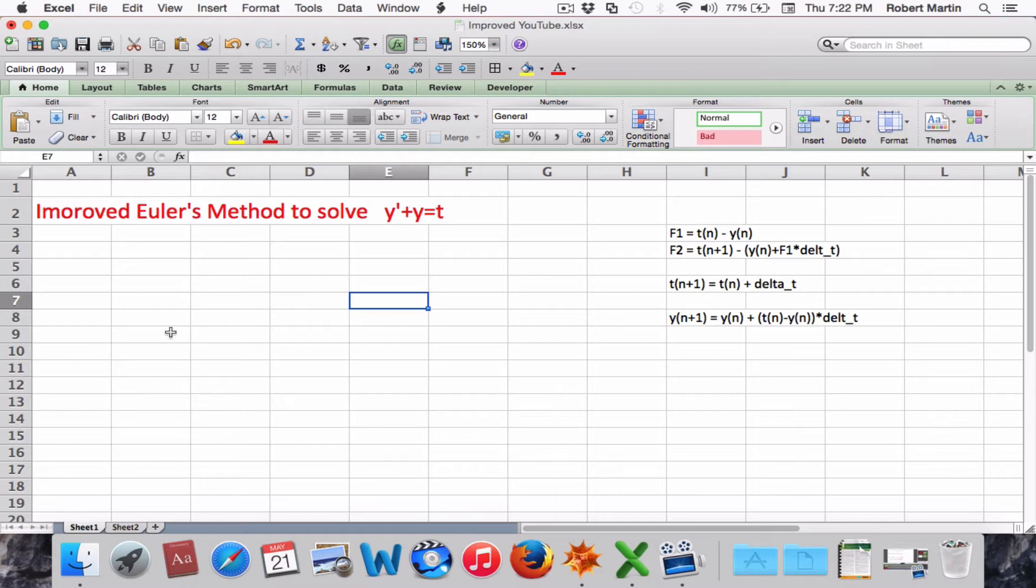Okay, so we will begin by assigning our delta T value to a specific cell. And we'll set our initial delta T to be 0.1. Next, we will label the columns that we're going to be using. The first column will be N for the iteration number, column for the time values, column for the Y values, one for F1, and for F2.